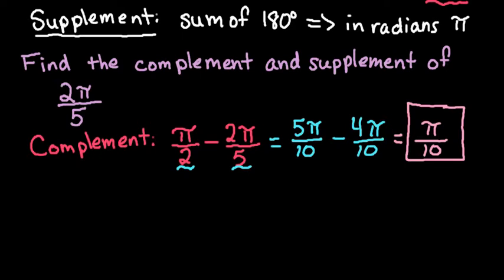All right, so for the supplement, the supplement remember that the sum together adds up to be π. So to find the missing angle or the supplement of 2π over 5 we would just do π minus 2π over 5.